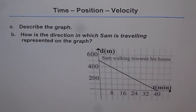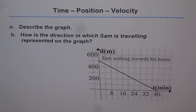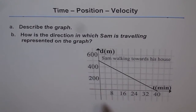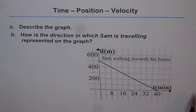Time, position, velocity. Here we have a graph which is a displacement graph, showing you change in position with time. You're supposed to answer these questions. Part A is to describe the graph, and Part B is how is the direction in which Sam is traveling represented on the graph. On the x-axis, the horizontal axis, we have the independent variable time in minutes.